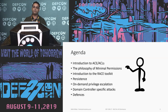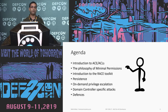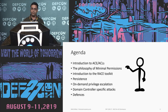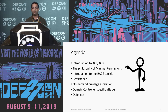What we are going to discuss today — the agenda — is we'll begin with a quick introduction to what ACEs or ACLs are in the access control model in Active Directory. Then the philosophy of minimal rights — what do I mean by minimal rights and why are they required. Then we'll have a quick look at a toolkit called RACE, which I'm going to release with today's talk.